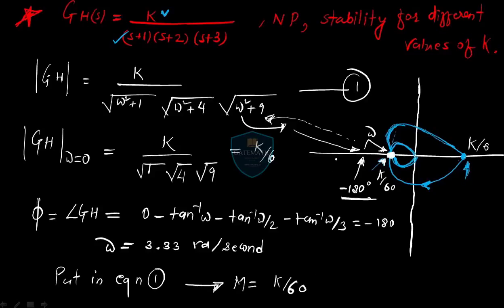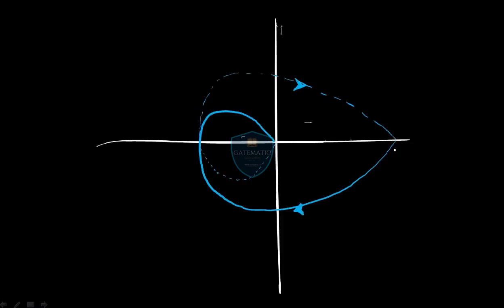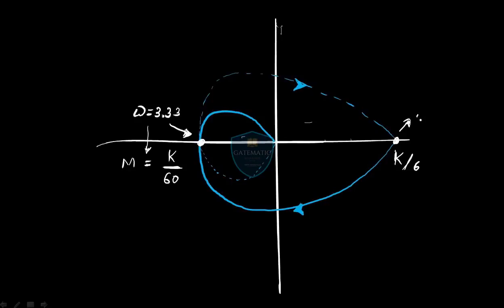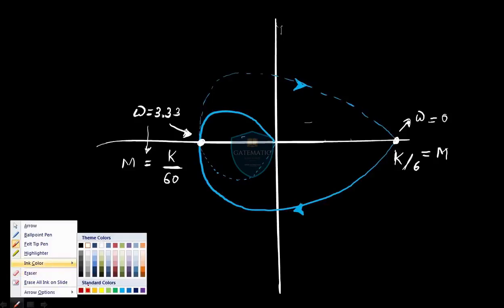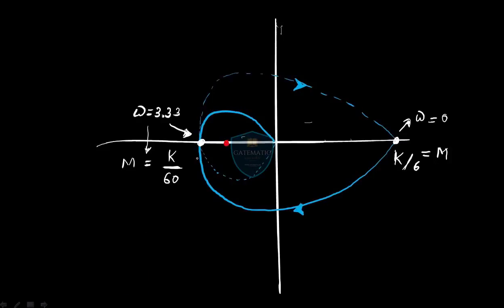If you put ω = 3.33 into the magnitude equation, you get the magnitude as k/60. So to summarize: this plot has the point at ω = 0 giving k/6, and the −180° crossing point giving k/60 at ω = 3.33 rad/s. Now we'll do the stability analysis.